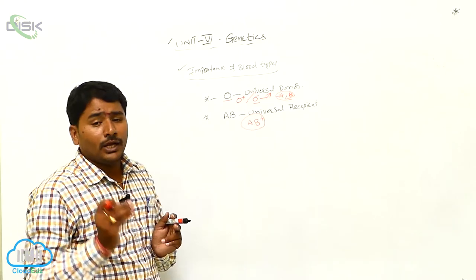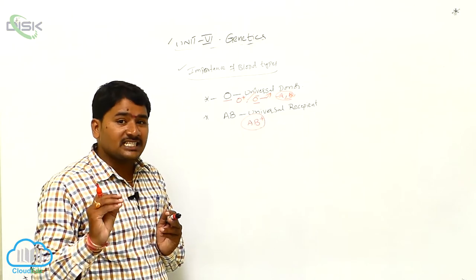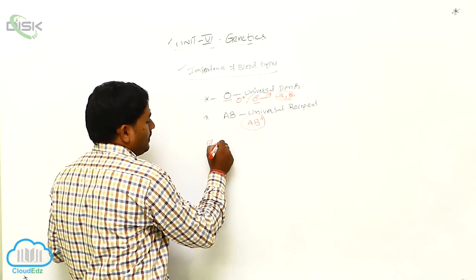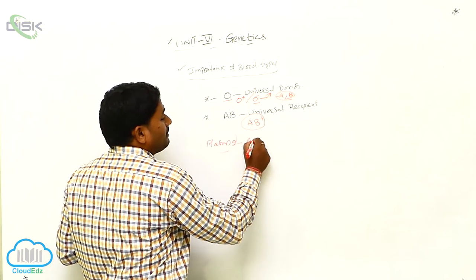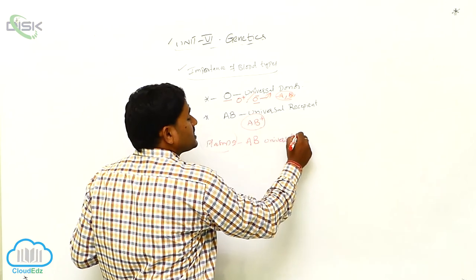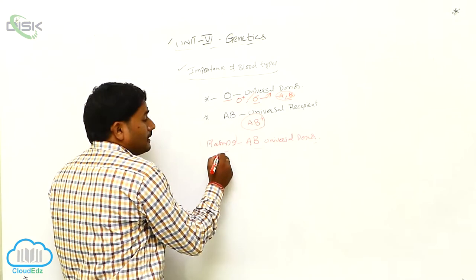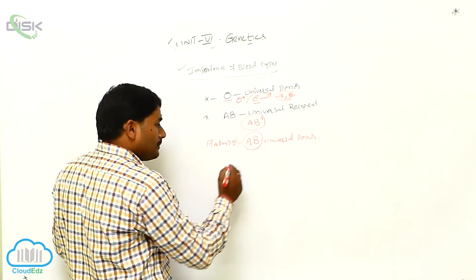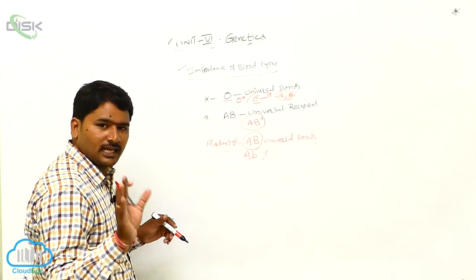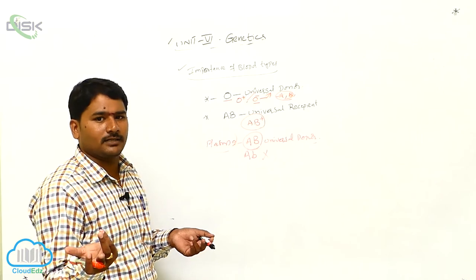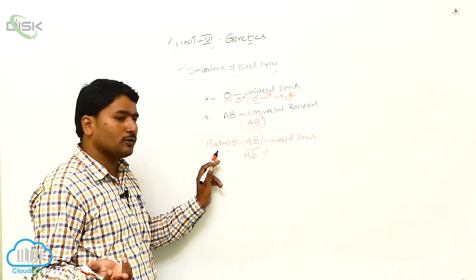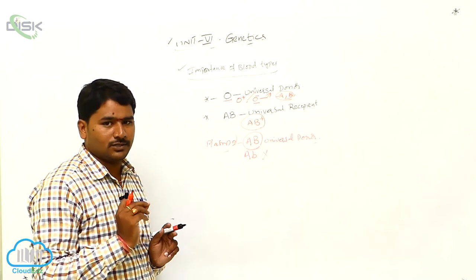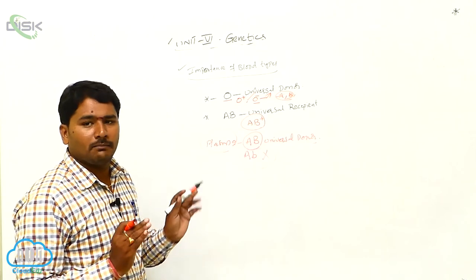If you consider antigens, O is the universal donor. But if you consider plasma, AB is the universal donor. When taking only a plasma injection, AB is the universal donor because antibodies are absent in AB plasma — no antigens, no antibodies. So AB is considered the universal donor for plasma transfusion only.